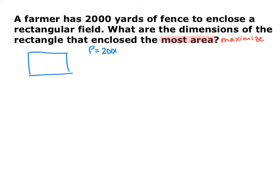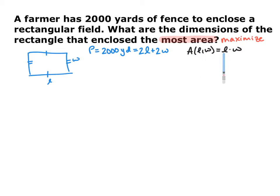Our perimeter of our fence is 2,000 yards, and we know that the perimeter of a rectangle is twice the length plus twice the width. Then area — we know that the area of a rectangle in terms of both the length and the width is the length times the width. In order to maximize this, we need to have area in terms of just one variable, either just the length or just the width.